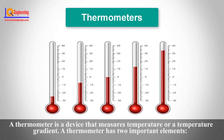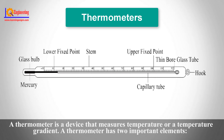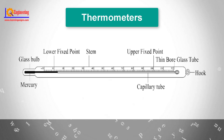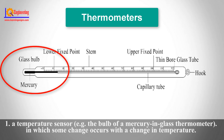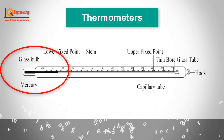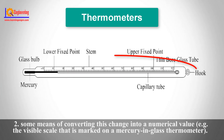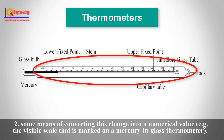A thermometer is a device that measures temperature or a temperature gradient. A thermometer has two important elements: first, a temperature sensor — such as the bulb of a mercury-in-glass thermometer — in which some change occurs with a change in temperature; and second, some means of converting that change into a numerical value, such as the visible scale marked on a mercury-in-glass thermometer.